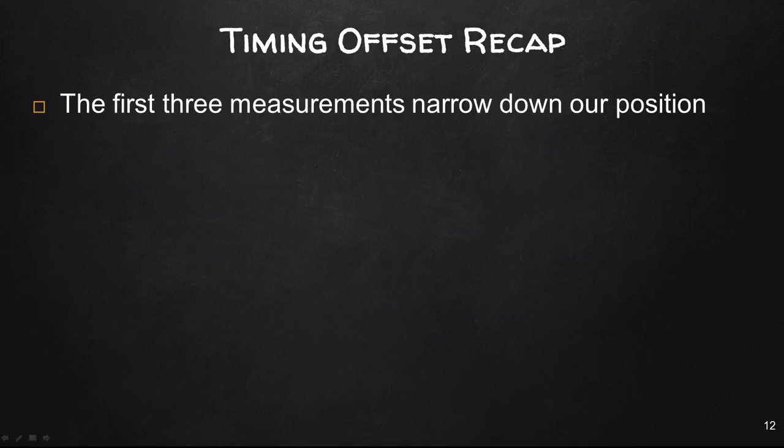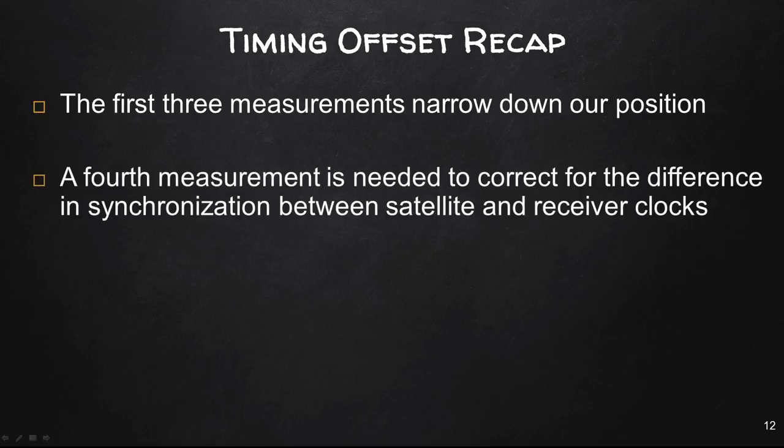Timing offset recap: The first three measurements narrowed down our position. A fourth measurement is needed to correct for the difference in synchronization between satellite and receiver clocks. The satellite uses an atomic clock, very accurate. The receiver clock uses a quartz clock, not nearly as accurate. There's going to be timing differences. If you look at your watch and I look at my watch, they're not going to be the same. And if you're using that time to calculate distance, they have to be spot on.